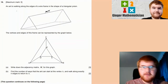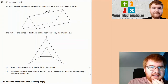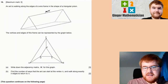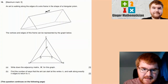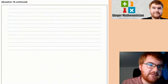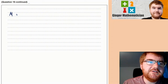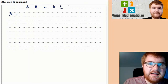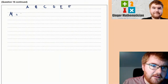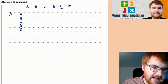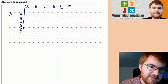On to question 16 — a nice graph theory question. An ant is walking along the edges of a wireframe in the shape of a triangular prism, and a graph is drawn to represent the situation. We need to write down the adjacency matrix M for this graph, which has six vertices: A, B, C, D, E, and F — so we need a 6×6 matrix.